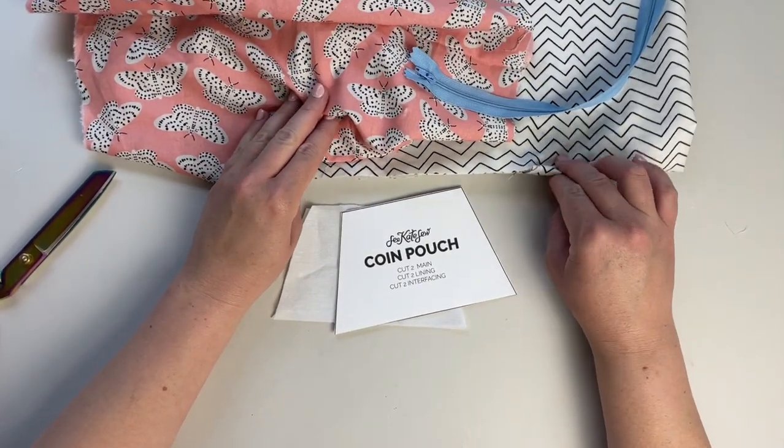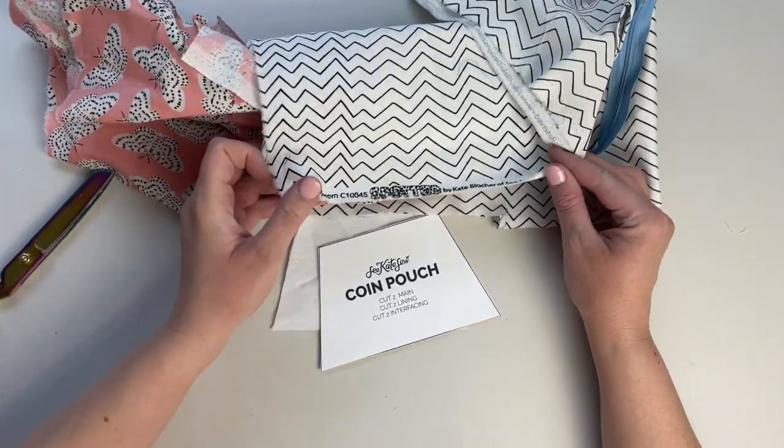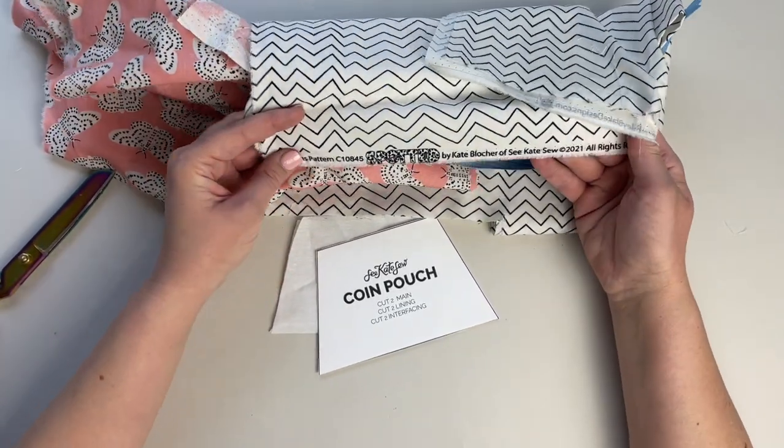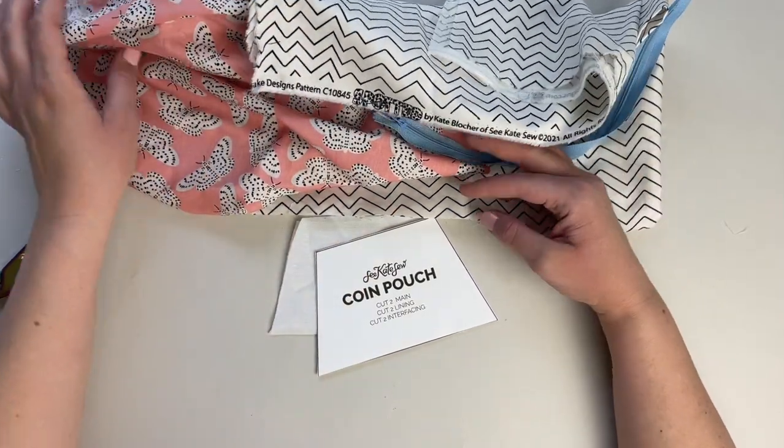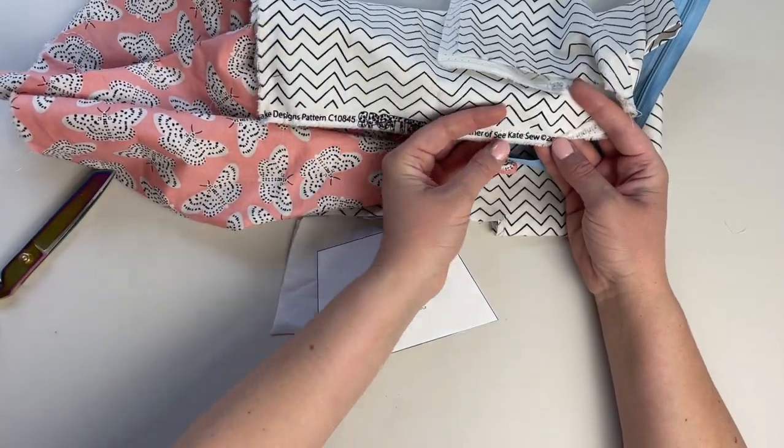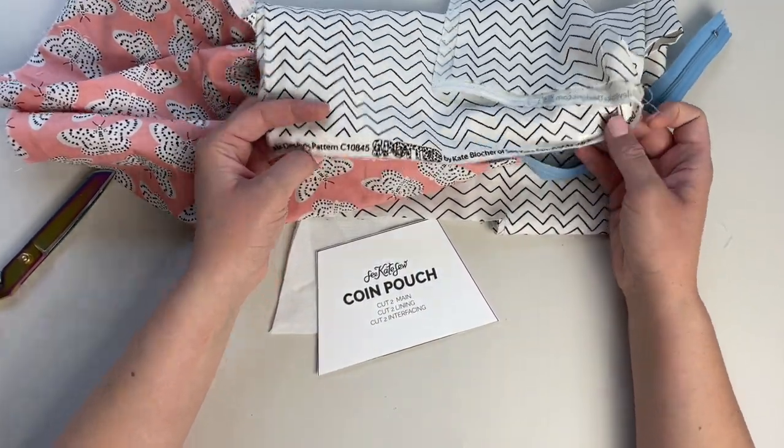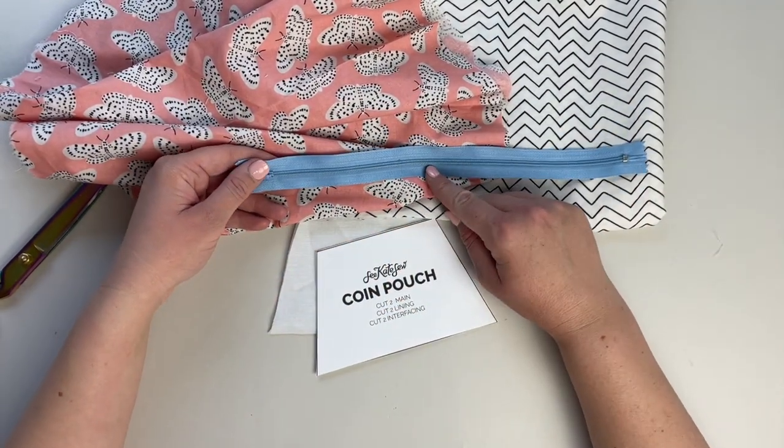So these fabrics are from my fabric line called Spotted. You can find them on Etsy and Amazon. This is a zigzag black and white and this is the butterfly print. Spotted by CK Sew, you can Google it if you want to find these prints. Then I picked a contrasting zipper for fun.